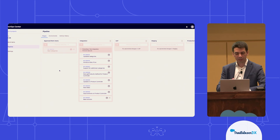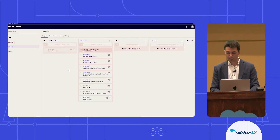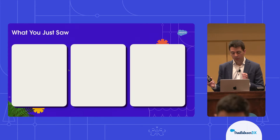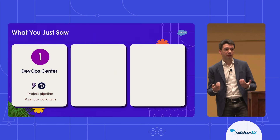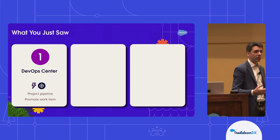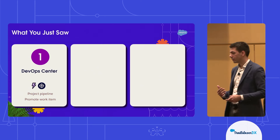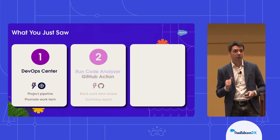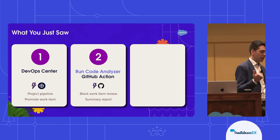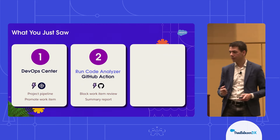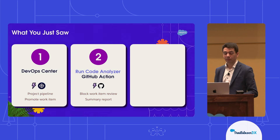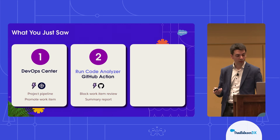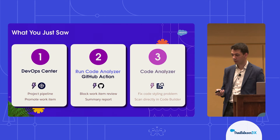That process begins once I click the Promote button. And with that, I think that's it for my demo. Let me go back to the slides. We saw DevOps Center being used to set up a project pipeline to ensure that there are multiple stages that changes need to go through before they actually make it all the way to the production environment. We saw the process of actually promoting a work item provided it met our code quality criteria. And to ensure that code did meet that code quality criteria, we are using our new Code Analyzer GitHub Action that scans code for vulnerabilities and blocks work items from being promoted if they do not meet that criteria.